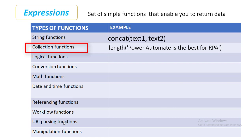Collection functions are used for arrays and strings. For example, if I want to find the length of the sentence 'Power Automate is the best for RPA', I'm going to use the length function on that string. Collection functions may be used to check if an array is empty or not, to grab the first or last item from the array, or even to use joins, unions, and intersection operations.